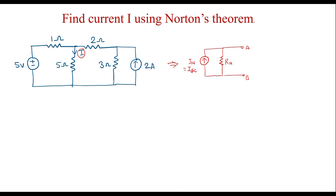In or Isc is the short circuit current, obtained by removing the resistor in which the branch current is being found. Here we are finding the current in the 5 ohm resistor. Let terminal A and terminal B be the open terminals after removing this resistor. By shorting A and B, we find the current through that shorted path. That current is known as Norton's current or Isc.